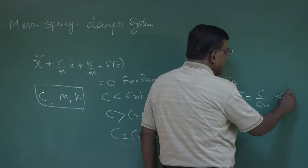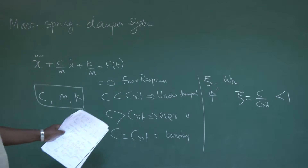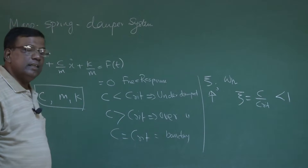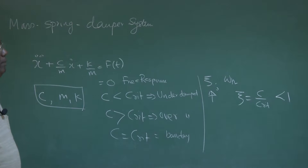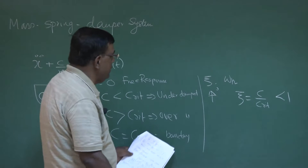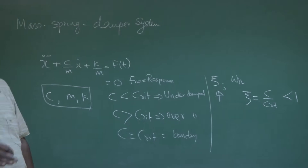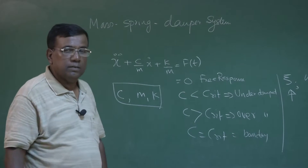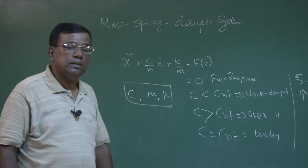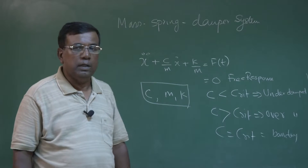If zeta is less than 1, that means c the damping of the system is less than c critical, so it will have an under-damped response. If zeta is greater than 1, it will have an over-damped response, because then c is greater than c critical. If c equals c critical, it is the boundary — the system will be non-oscillatory but will return fastest to equilibrium once the disturbance is withdrawn. We are talking about small disturbances about the equilibrium.